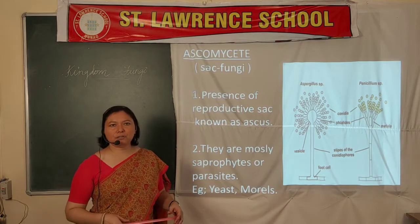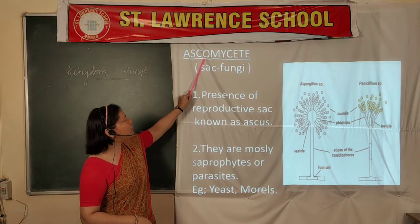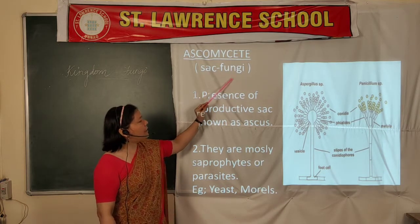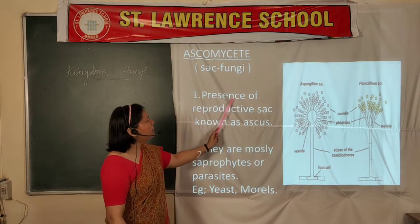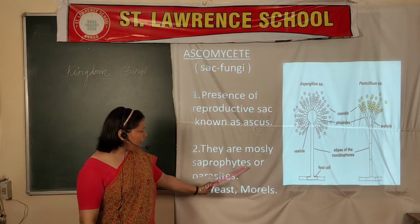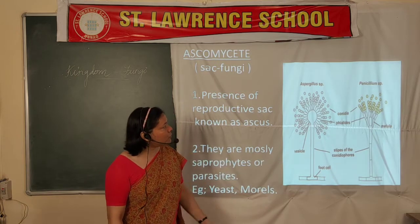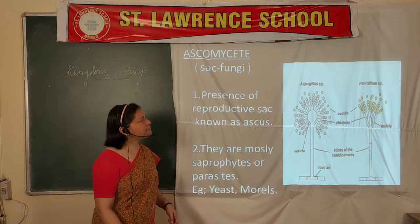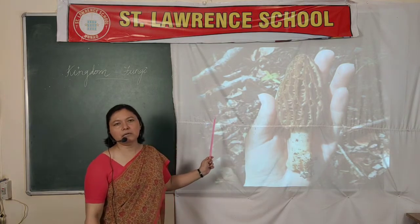The next classification is Ascomycetes. The word 'ascus' means a sac or bag-like structure. These fungi bear a bag-like structure for holding spores; the reproductive structure is known as the ascus. They are mostly saprophytes or parasites. Best examples include yeast, morels, Penicillium, and Aspergillus. Morels also come under the sac fungi.